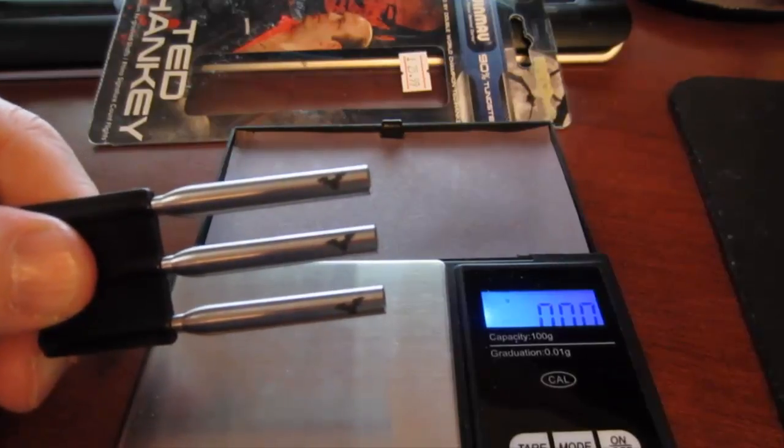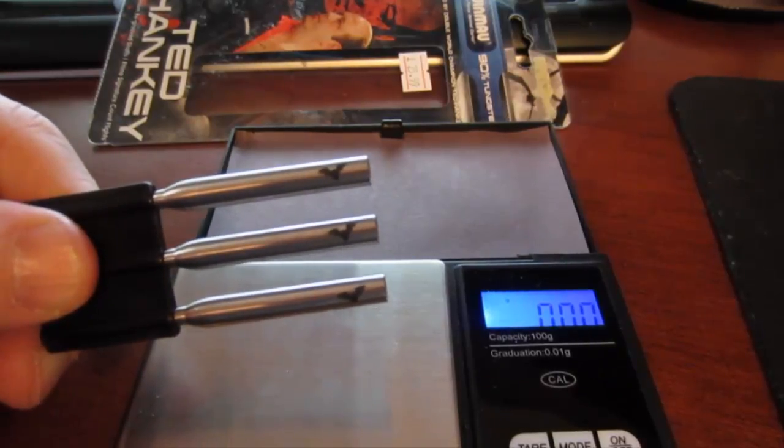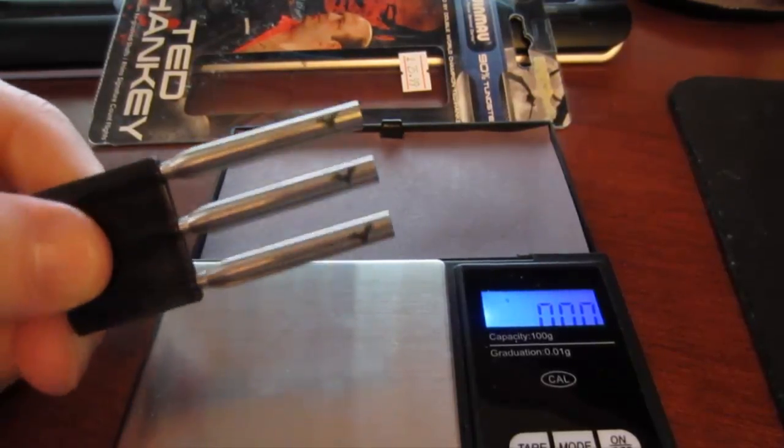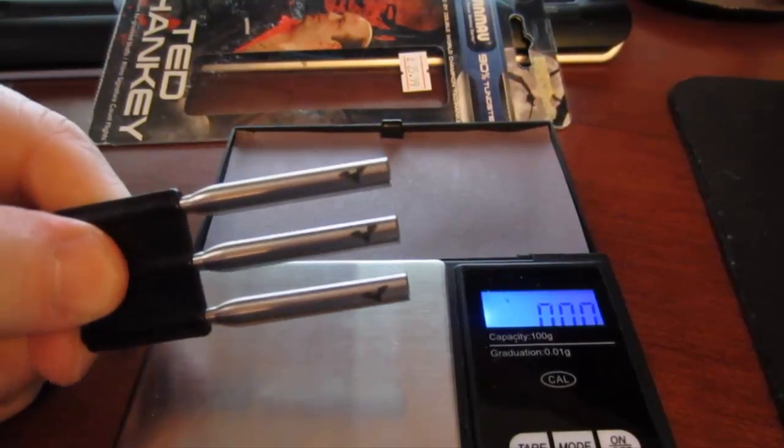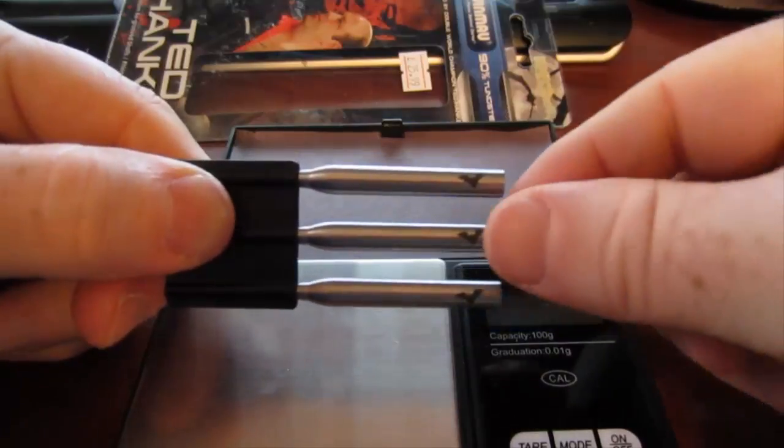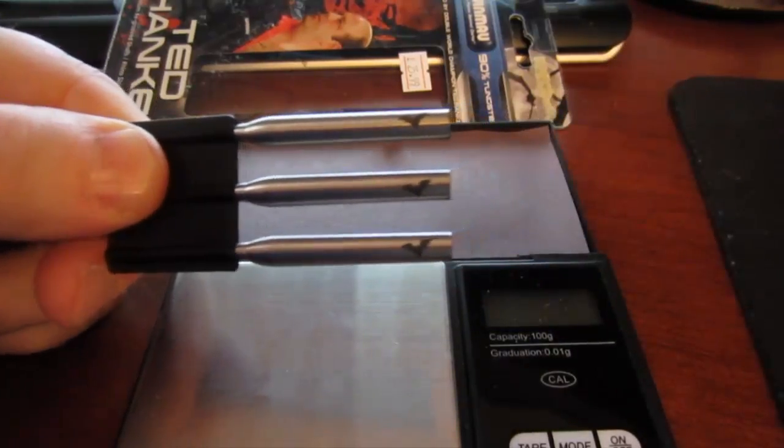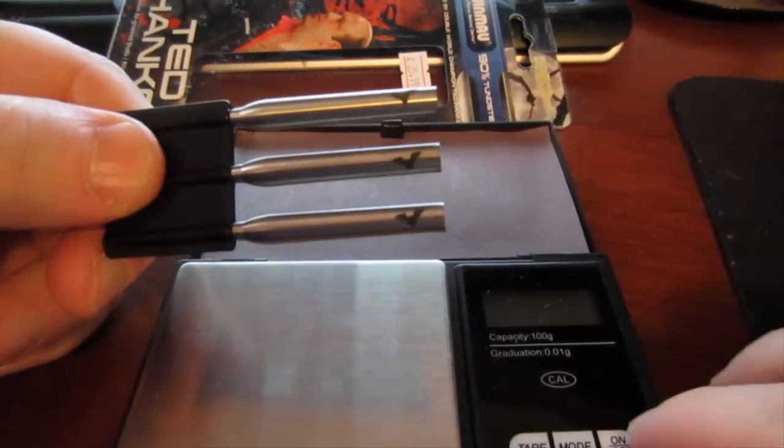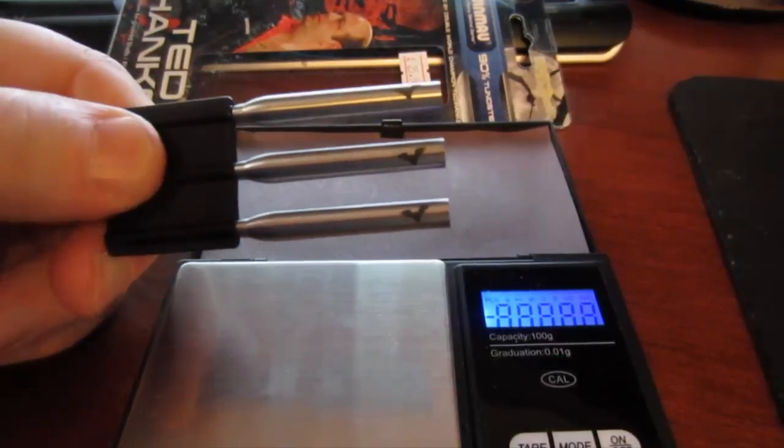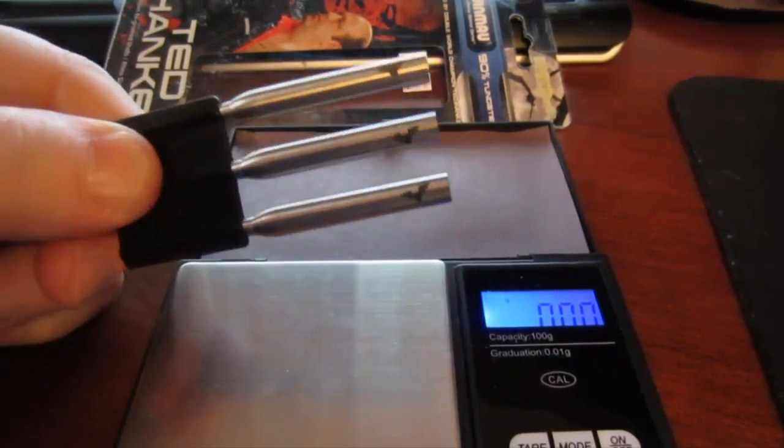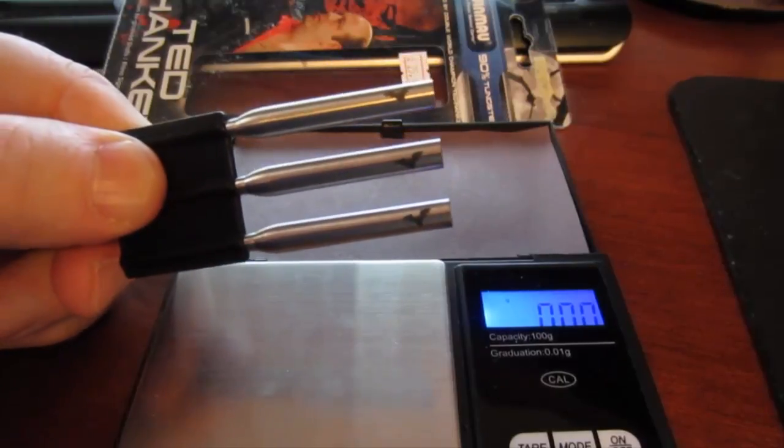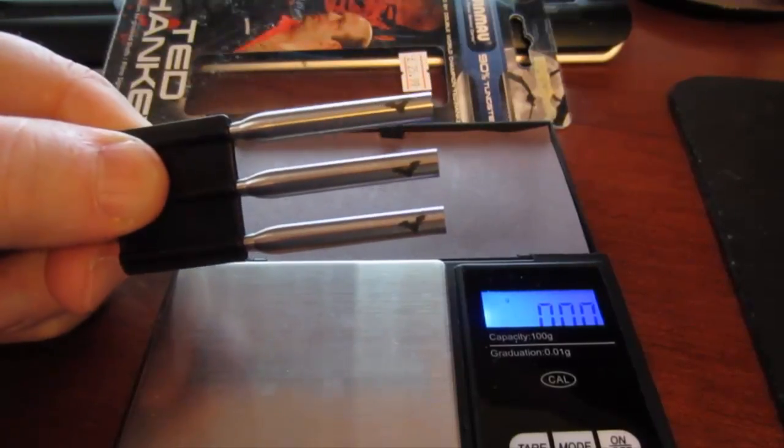If you want to check those guys out, hit them up in the description box or somewhere in the comments section, probably in the pinned comment. What we're going to do in this video is take these 14 gram Hanky darts and see how much I can make them weigh. First step will be to put them on the scale and get their stock weight.